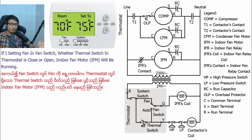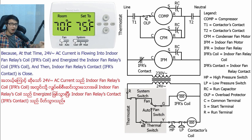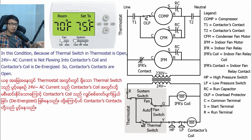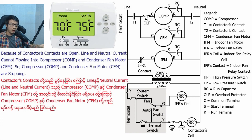If I set the fan switch to fan-on, whether the thermal switch in the thermostat is closed or open, the indoor fan motor will be running. Because 24V AC current is flowing into the indoor fan relay coil and energizing it, the indoor fan relay contact closes, and line and neutral current flows into the indoor fan motor, so it runs. In this condition, because the thermal switch in the thermostat is open, 24V AC current is not flowing into the contactor coil and the contactor coil is de-energized, so the contactor contacts are open and line and neutral current cannot flow into the compressor and condenser fan motor.